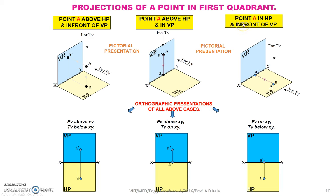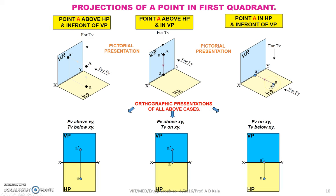Similarly, the third condition: if point A is in HP and in front of VP, that means A is in the horizontal plane. To draw the projection, again draw the XY line. How far this point A is in front of VP will be seen only in the top view. Therefore understand this distance, draw the locus, mark point A on that locus, then draw the vertical projector. Because point A is on HP, its front view A-dash will come on the XY line.